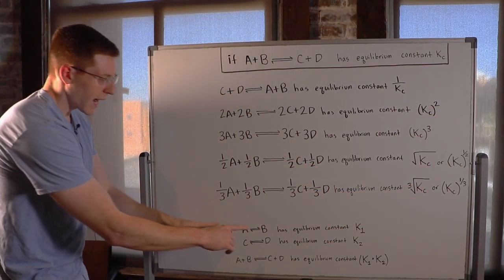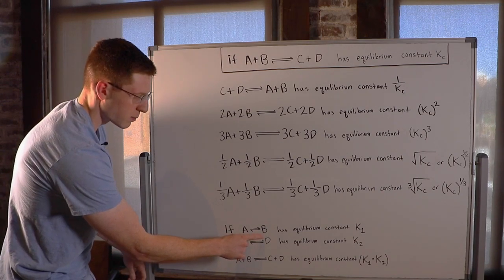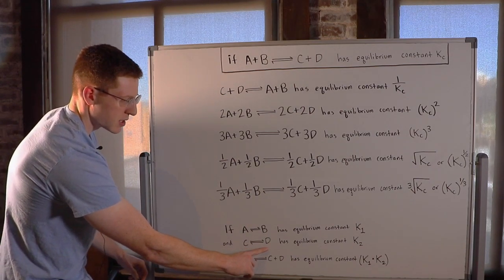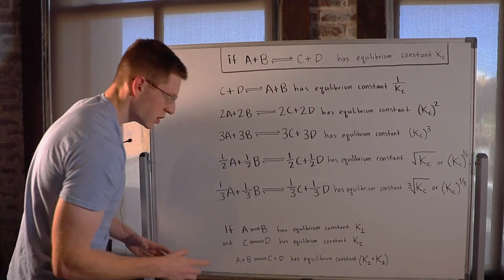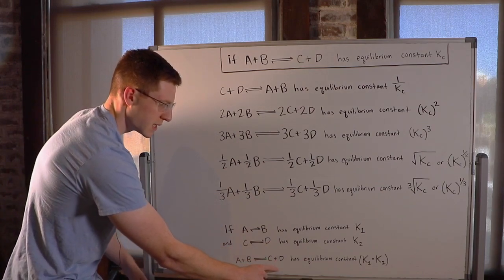Finally, if you want to add two reactions together, let's say you have A in equilibrium with B, and that's got an equilibrium constant K1, and then you've got C in equilibrium with D, and that has equilibrium constant K2, and you add them together so that you have A plus B is in equilibrium with C plus D,